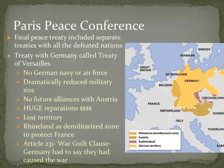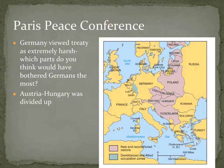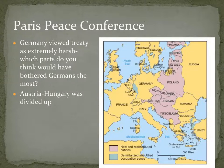Germany viewed this treaty as extremely harsh. Austria-Hungary ceased to exist — looking at the map, the new countries created after World War I are in pink. Austria-Hungary was divided into Austria and Hungary, and a new state called Yugoslavia was created. On your paper, it also asks why new countries created after war could cause future conflicts — you can discuss that now or come back after I talk more about some of these future nations.